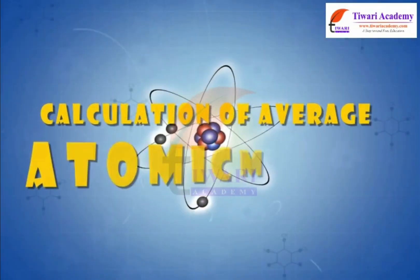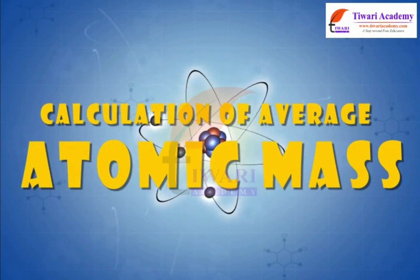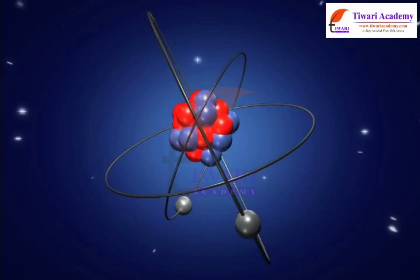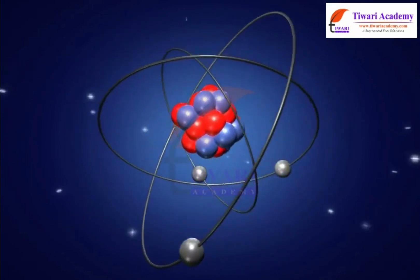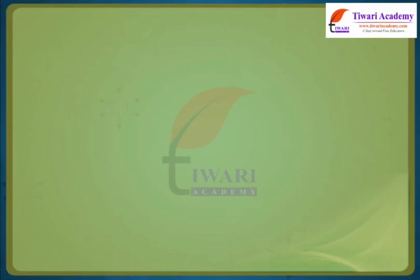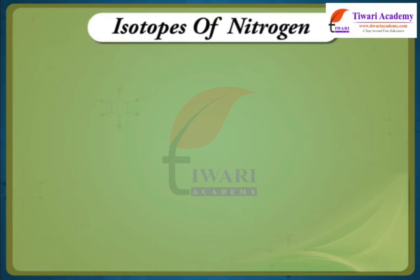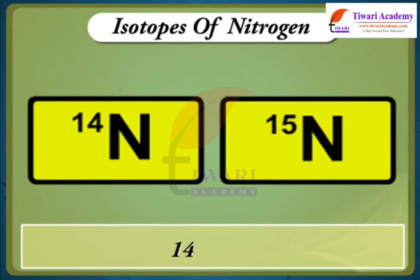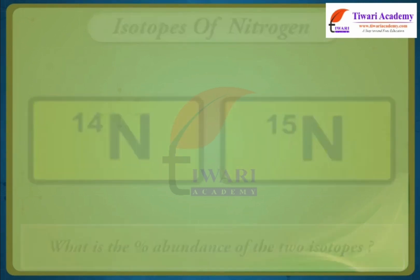Calculation of average atomic mass. Dear students, the atomic mass is the mass of an atomic particle, subatomic particle or molecule. Let us understand it with the help of an example. Nitrogen occurs in nature in the form of two isotopes with atomic mass 14 and 15 respectively. If average atomic mass of nitrogen is 14.0067, what is the percentage abundance of the two isotopes?